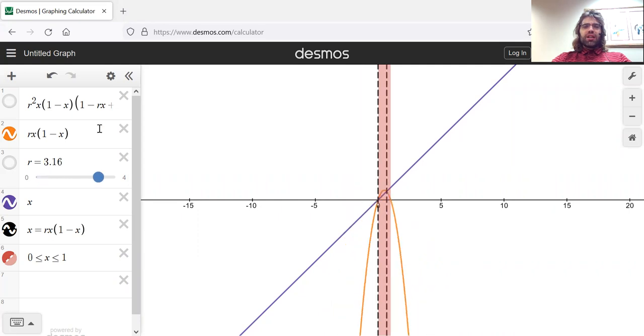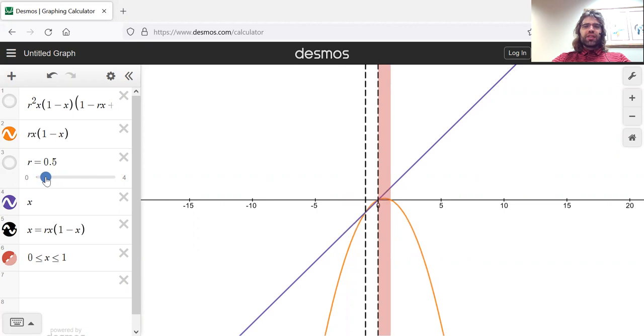As R increases, these fixed points get closer and closer together. And at R equals one, they merge.